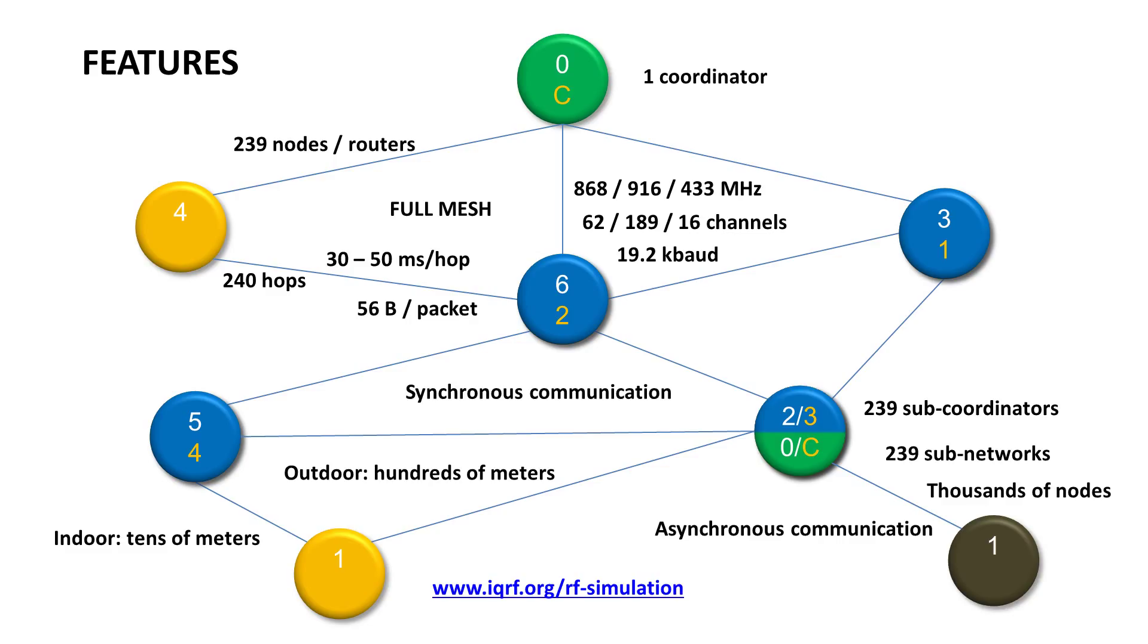First of all, you need IQRF data control transceivers that are represented with these gray bullets. As you can see, each module has a unique 4-byte module ID, which is especially important for the modules where you upload a hardware profile for a coordinator.